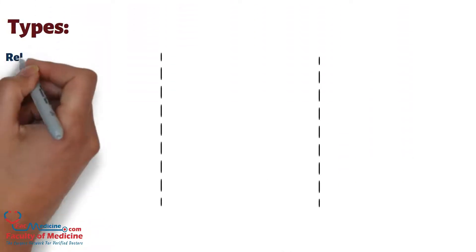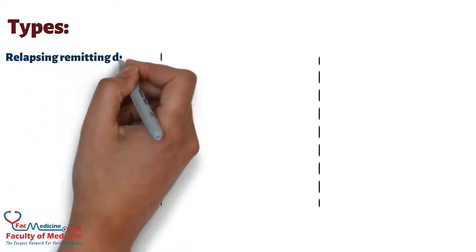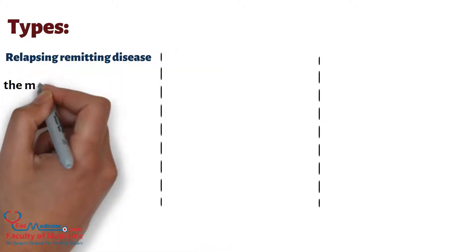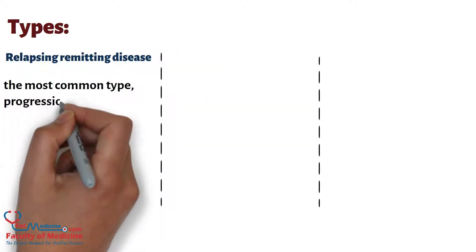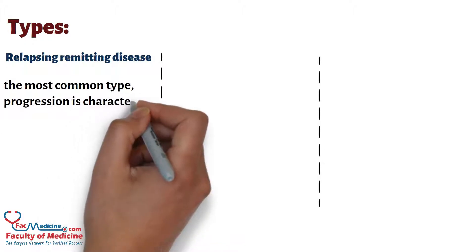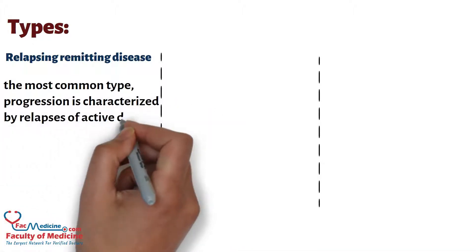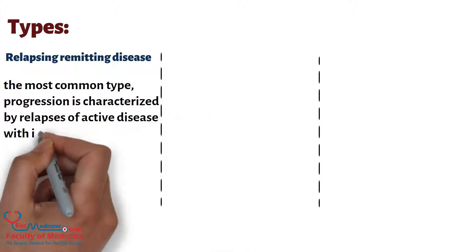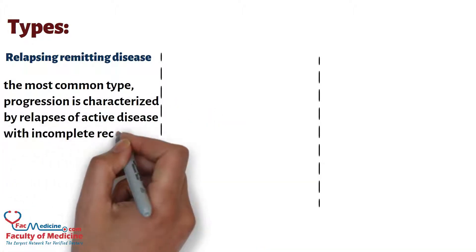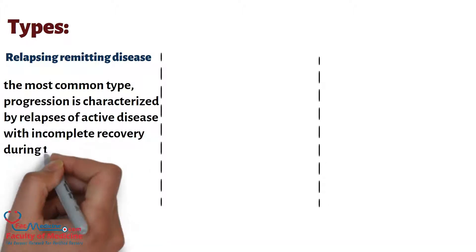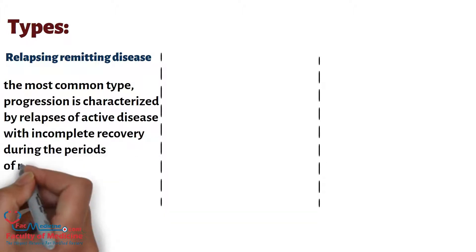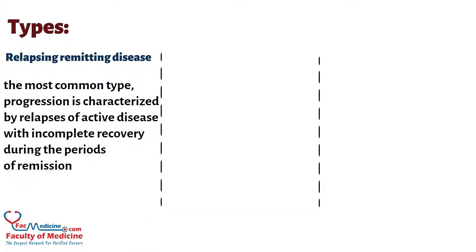Types: Relapsing-remitting disease is the most common type. Progression is characterized by relapses of active disease with incomplete recovery during the periods of remission.